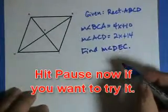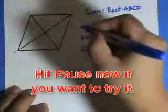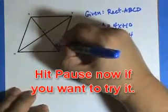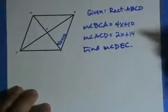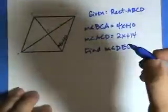Anyways, here we go. So, BCA. BCA is 4x plus 10. That's in here. ACD is over here, right underneath. 2x plus 14.